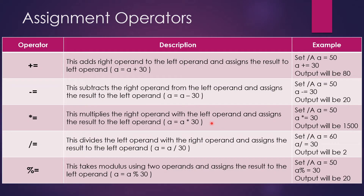Assignment operators are plus-equal-to, minus-equal-to, multiply-equal-to, divide-equal-to, and modulus-equal-to. These are a short form of a full statement. When you use plus-equal-to, it creates a command like a equals a plus 30. For example, if I use a plus-equal-to 30 and a's value is 50, then 50 plus 30 equals 80, so the answer is 80.